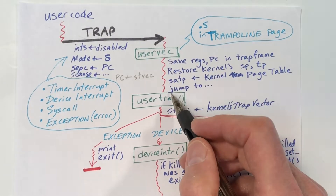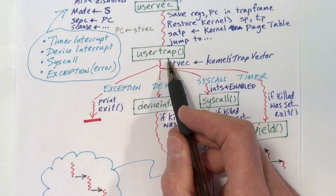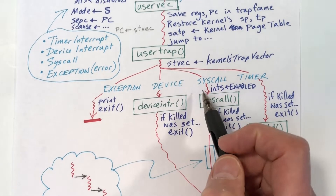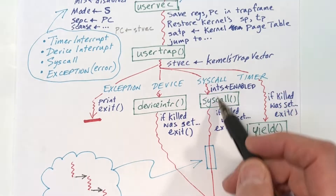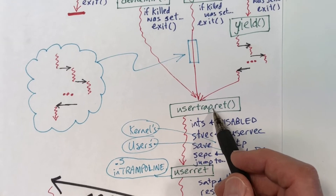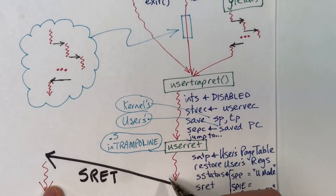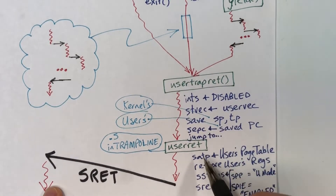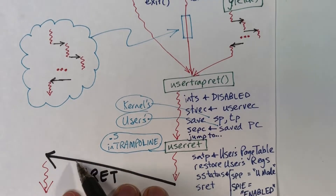Uservec is assembly code. It immediately saves all the registers and basically just jumps to the function usertrap, which then looks at the situation and determines whether we have a program exception, a device interrupt, a timer interrupt, or a system call. Ultimately we come down to usertrapret, which then invokes userret and does the SRET instruction. It will save the registers and get everything restored, and then go back to executing in user mode.